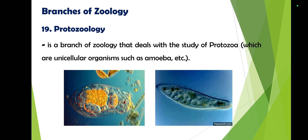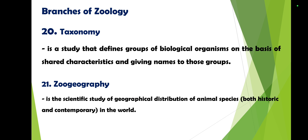Protozoology is the branch of zoology that deals with the study of protozoa — unicellular organisms, meaning organisms made of a single cell. Examples of unicellular organisms include protozoa, protists, amoeba, and bacteria. All of these cannot be seen with the naked eye and require a microscope.